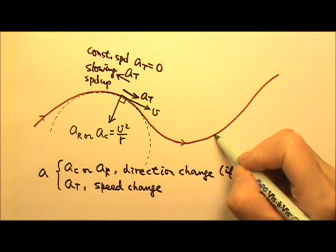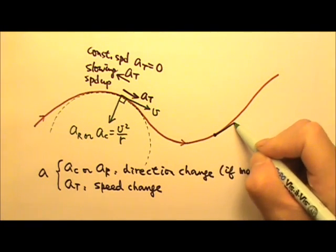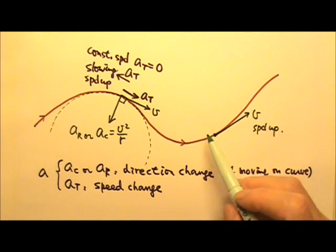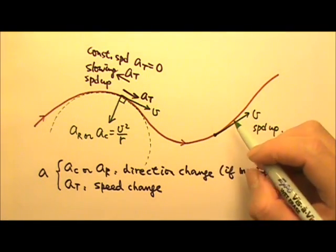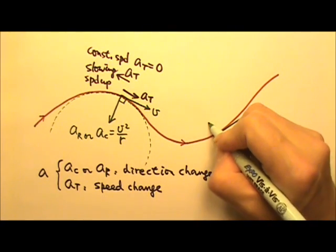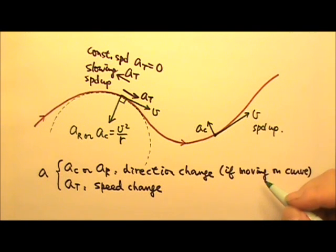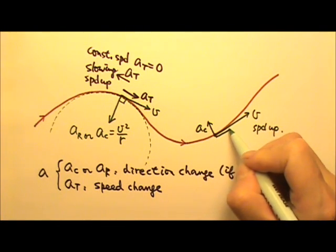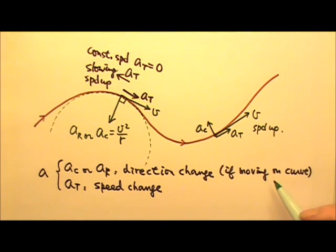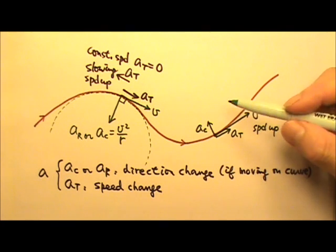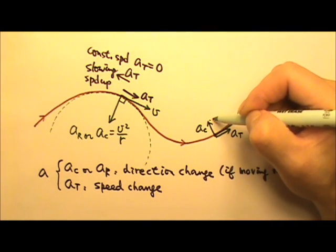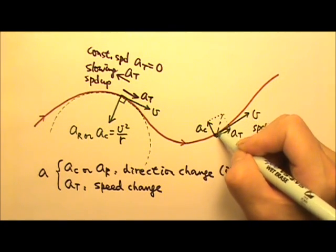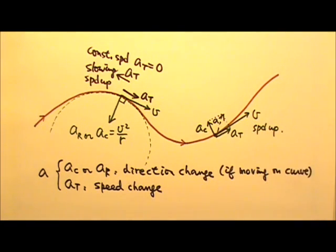For example, when the object is here, it has a velocity tangent to the path, and it is speeding up. Since it is moving on a curve, there is a centripetal or radial acceleration going towards the center. And because it is speeding up, it has a tangential acceleration that is in the same direction as the velocity. This means the total acceleration will be the sum of these two vectors. I can use the parallelogram method — in this case it happens to be a rectangle — and the diagonal is the sum, giving the total acceleration.